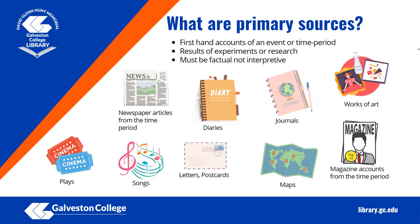Some examples of primary sources are plays, newspaper articles from the time period, songs, letters, postcards, diaries, journals, maps, works of art, and magazine accounts from the time period.